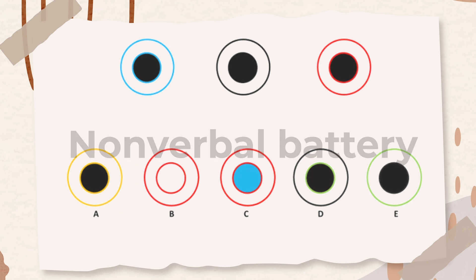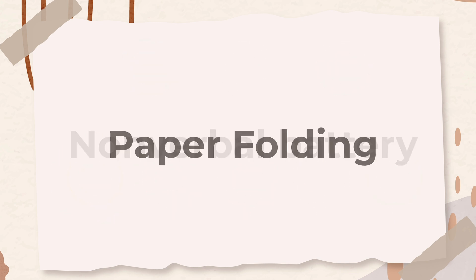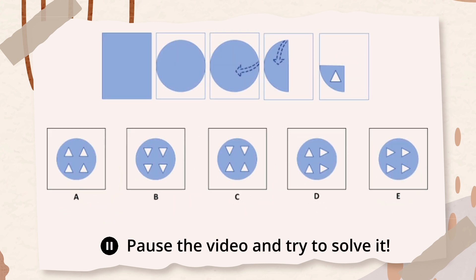The final subtest in this nonverbal battery is paper folding. This question shows a paper folded several times and then punched with holes. The answer choices contain unfolded papers with punched-in holes. You need to determine which of the answer choices is the final product of the unfolded punched-in paper.